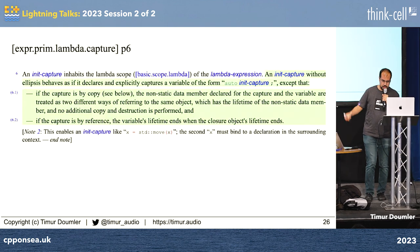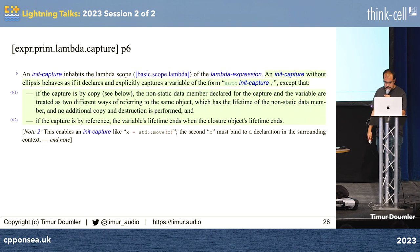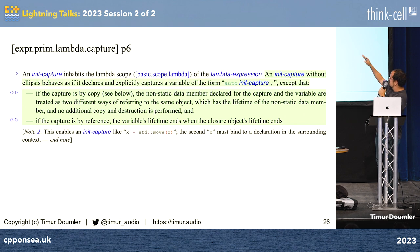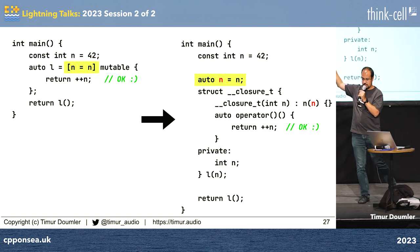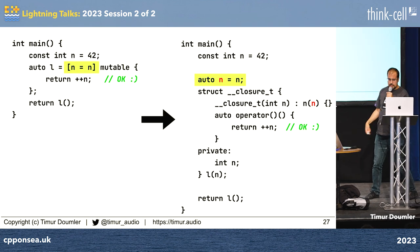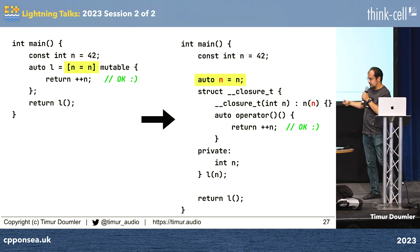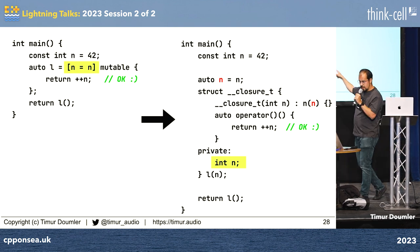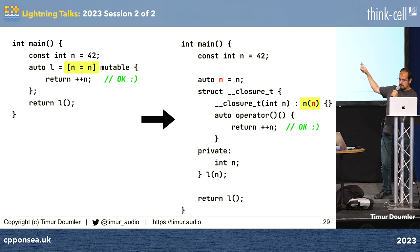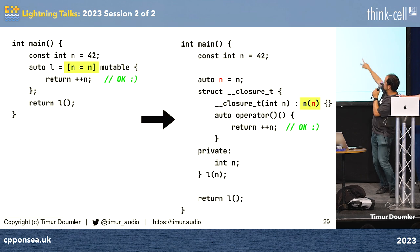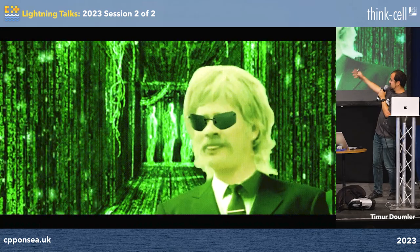I couldn't figure it out, and then I found Richard Smith, and he actually explained to me what was going on. This 'auto init-capture;' thing — as if it declares a variable of the form 'auto init-capture;' — means that it is as if it declares this kind of thing. And there's a 'red n' now, because it's a different n from the 'black n'. Then it implicitly — sorry, explicitly — captures the value, which is the usual mechanism: you create a variable there, a member variable there. And then 'no actual copy is performed' refers to this copy, which isn't an actual copy — this n here is actually just a name referring to the red n. Time's up, so we figured it out.